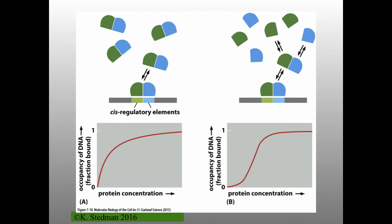One alpha helix in the major groove of DNA can only interact with about four or five base pairs. In the human genome, four or five base pairs occur at random frequently. But if you have two sets of five to six bases next to each other, that happens at a very low frequency even in a large genome. You can also mix and match dimerization motifs with different DNA binding motifs for combinatorial control.